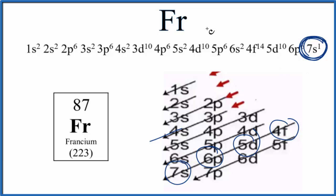So this is the electron configuration for francium. If we wanted to make this a little bit easier to read, we could use what's called condensed notation.